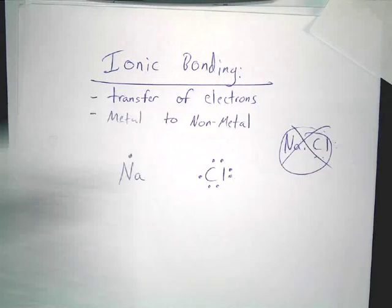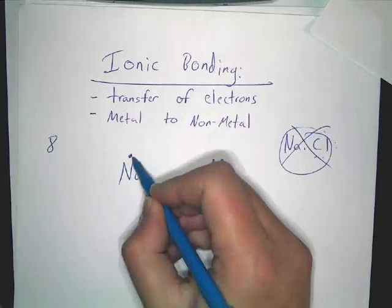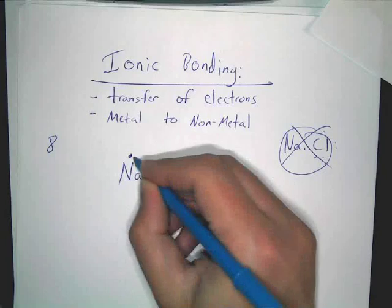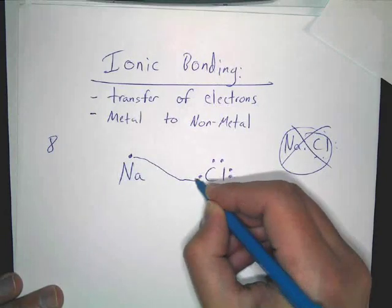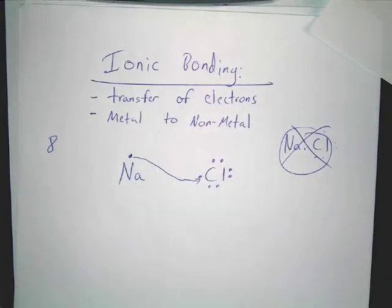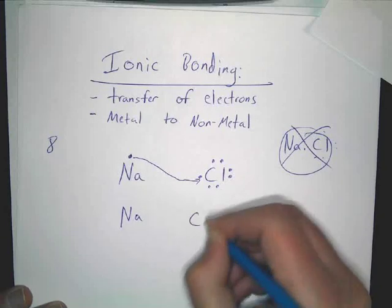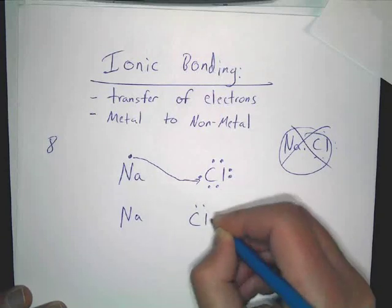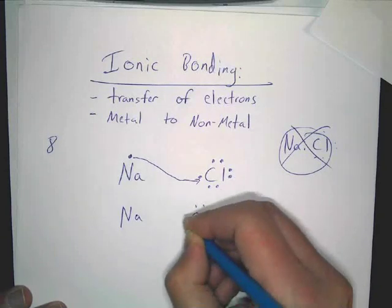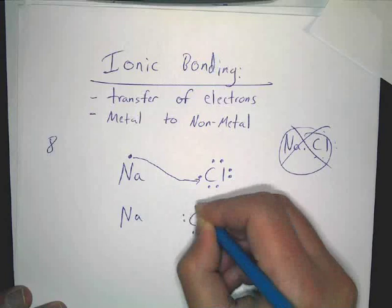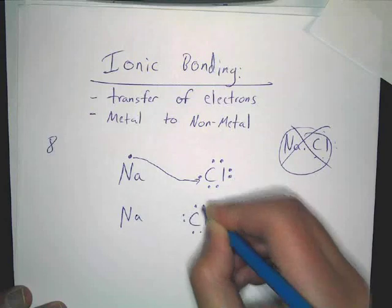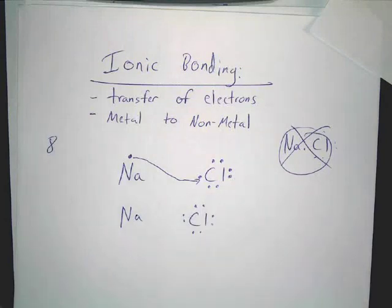So that's what it does — it donates this electron to chlorine. Now you can write it: sodium, and then chlorine has eight. And theoretically, sodium, in its next shell, has eight. It's happy too.